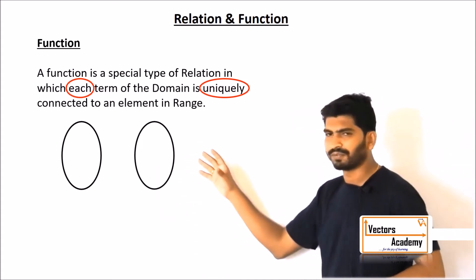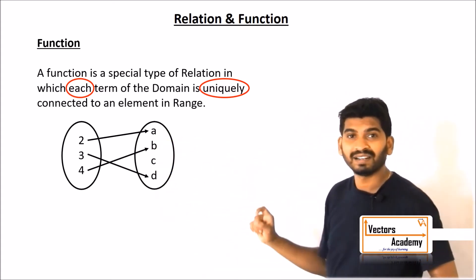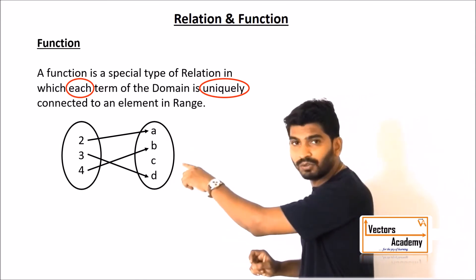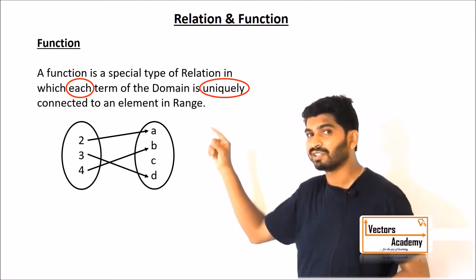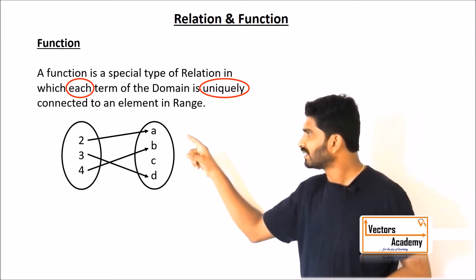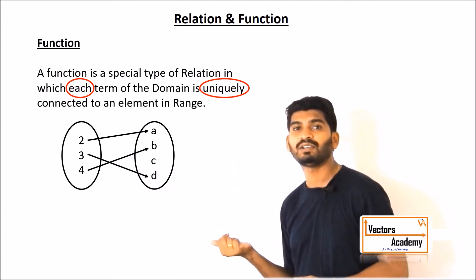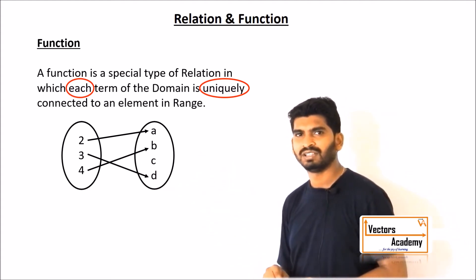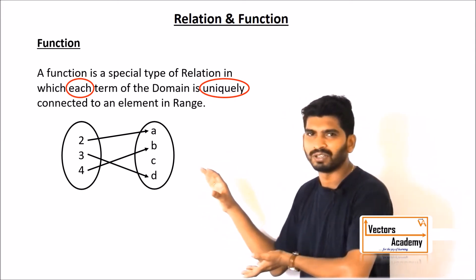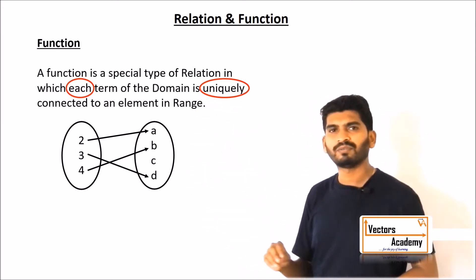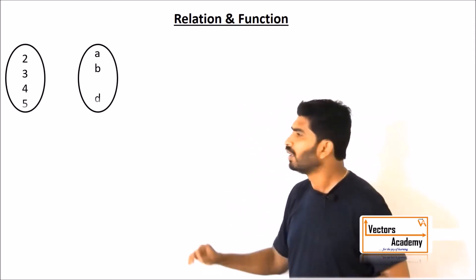Look at this example of a function. You can see all the elements in the domain are connected — none of the elements in the domain are left out. That is what 'each element is connected' means. And all the elements are connected uniquely to elements in the range — that is the 'unique connection.' This is an example of a function.